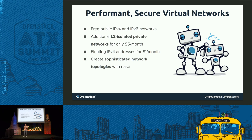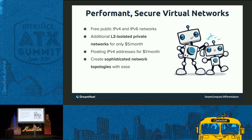We also have performant and secure virtual networks. Every instance inside DreamCompute gets a free public IPv4 address and IPv6 address. If you need more sophisticated private networking capabilities, for $5 a month per network you can create L2 isolated private networks. This is all powered by Project Astara, Cumulus Linux, and VXLAN under the hood. We have customers with tens of private networks in their tenant supporting hundreds of VMs, and it's all hardware accelerated at the host and at the switch.